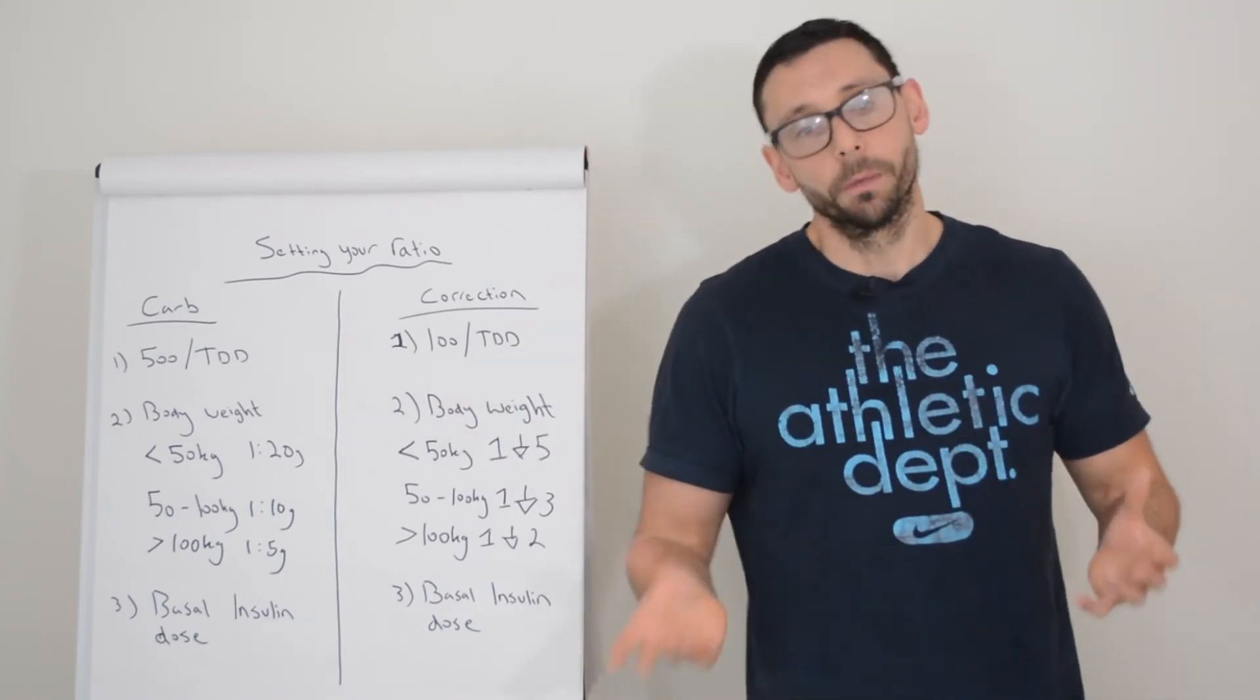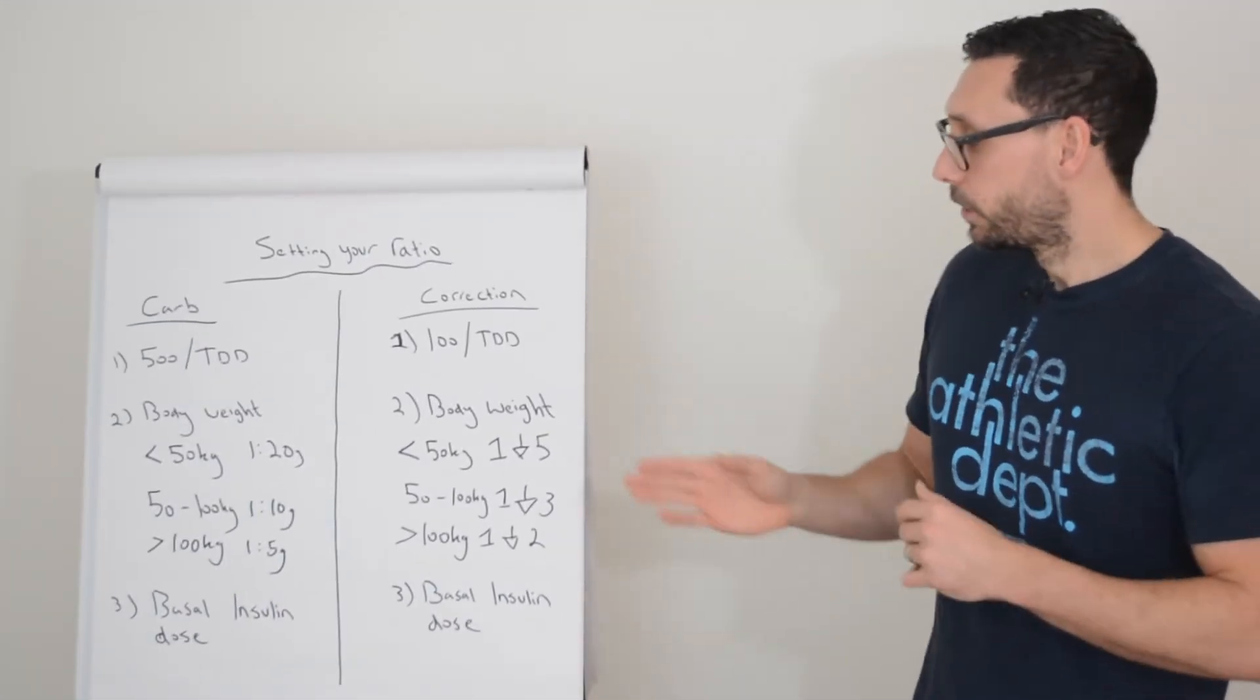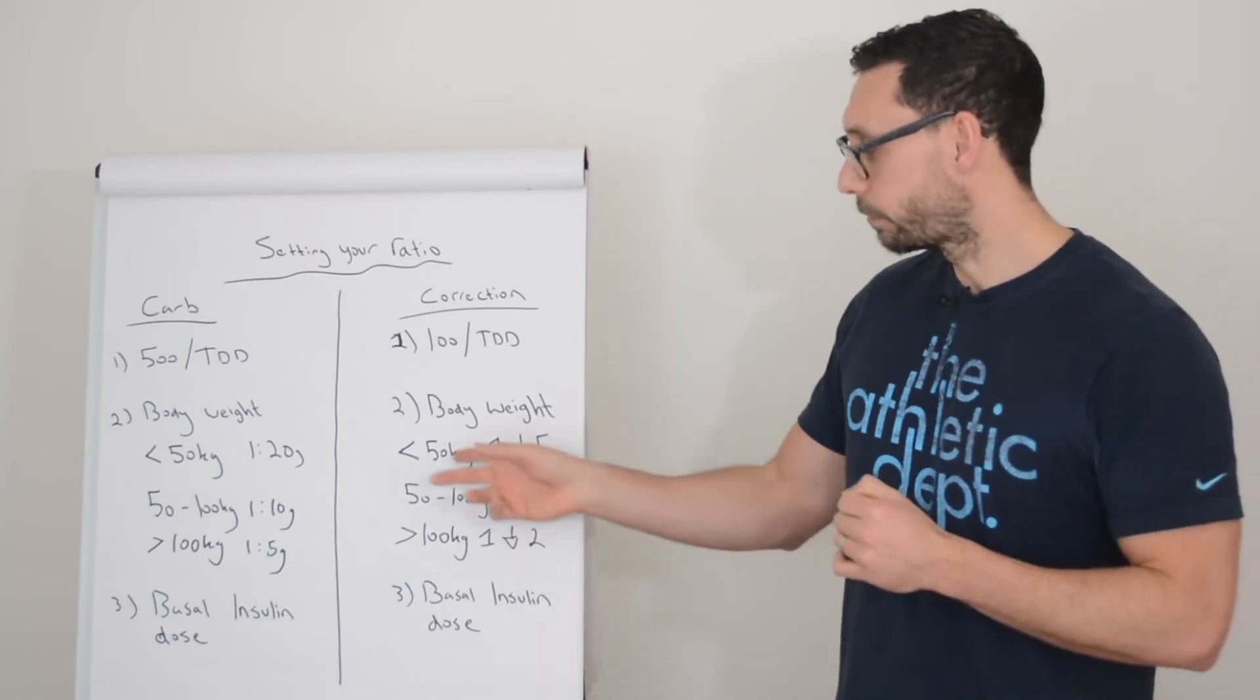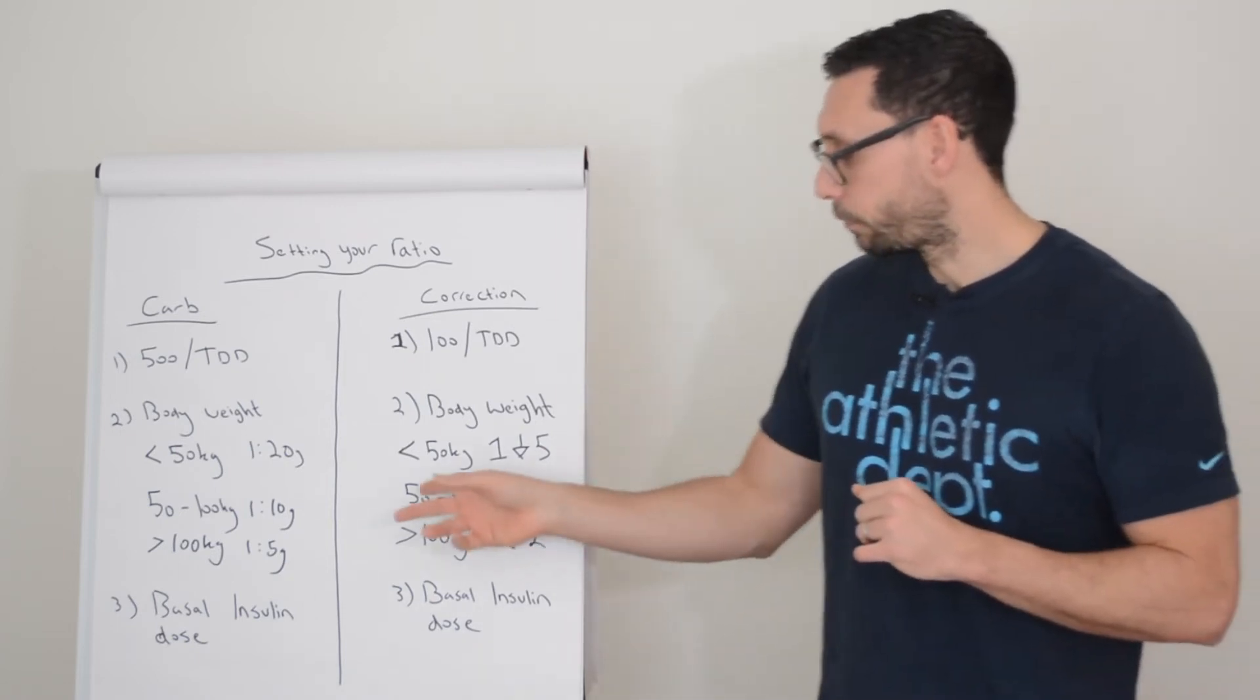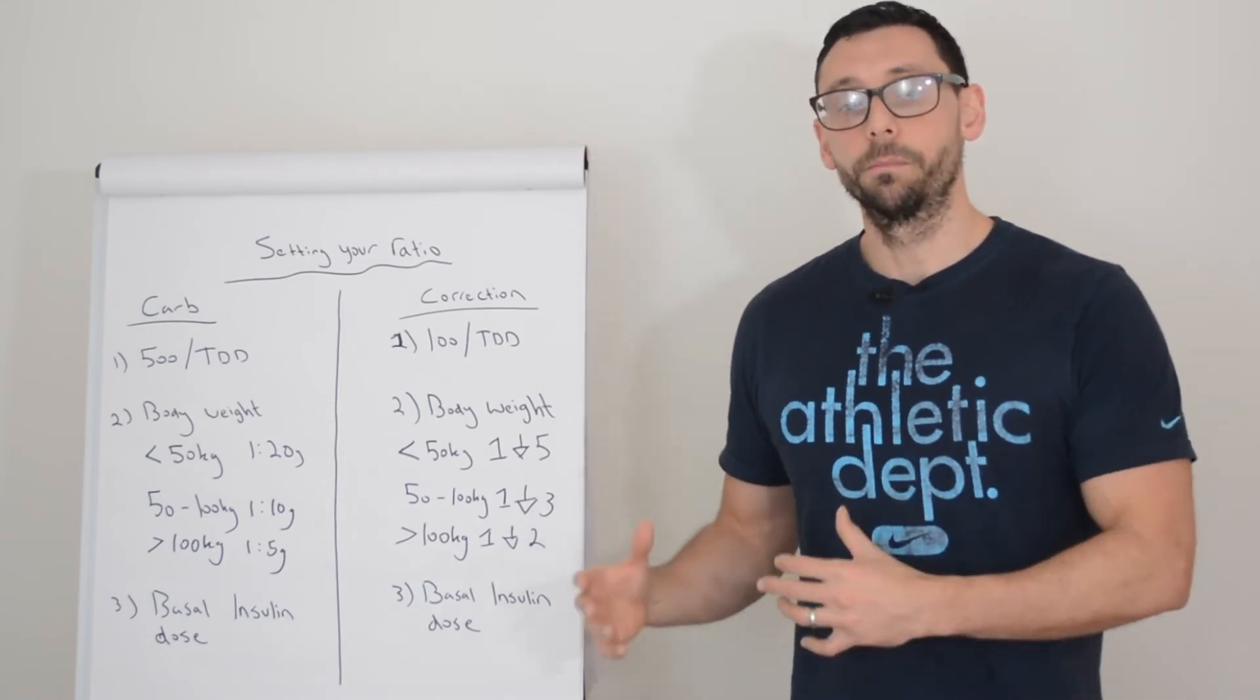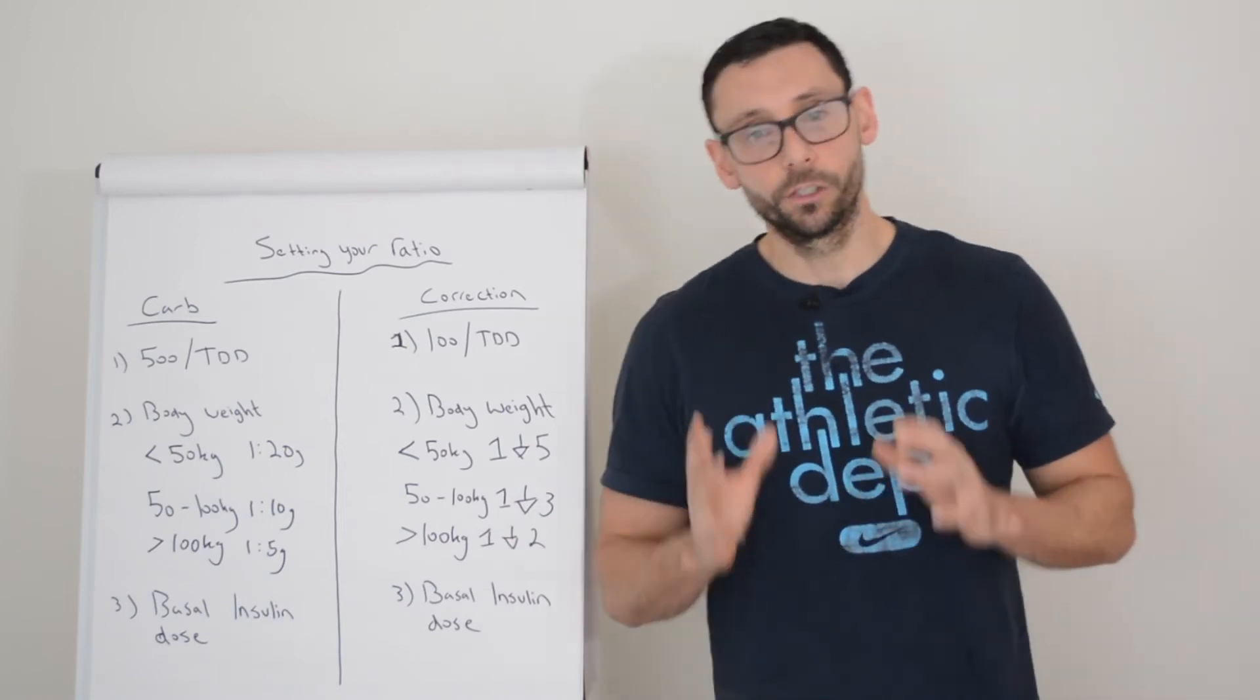Number two is again you can use your body weight. As you're starting to see, if you're lighter you tend to be more sensitive to your insulin. So if you weigh under 50 kilograms, one unit will typically drop you by five millimoles per liter. If you weigh between 50 and 100 kilograms, one unit will drop you roughly by three millimoles per liter. And if you weigh over 100 kilograms, one unit will drop you by two.